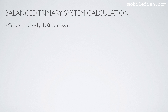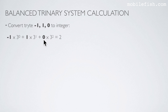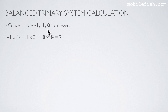I will now demonstrate how to convert a tryte with this value to an integer. This minus 1 is this minus 1, this 1 is this 1, this 0 is this 0. The values 0, 1, and 2 represent these positions: position 0, 1, and 2. If you calculate this, it is value 2. By the way, in a trinary system you go from left to right to get the positions.